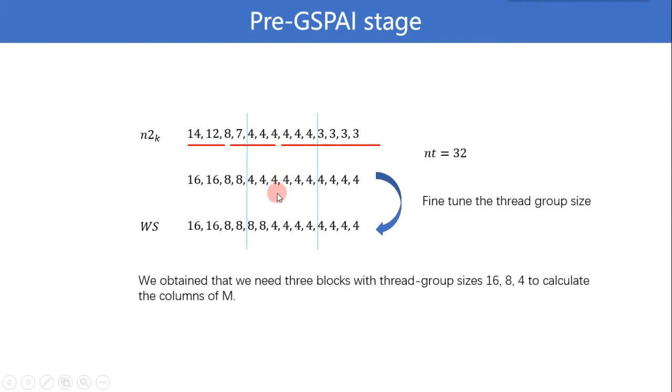Then, we fine tune the thread group size and store it in the array Ws. Finally, we obtained that we need 3 blocks with thread group size 16, 8 and 4 to calculate the columns of M.